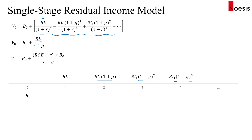We can express residual income in year one in terms of ROE minus R, multiplied by the current book value per share. If ROE equals R, then that term equals zero, leaving the intrinsic value equal to the current book value — so V0 equals B0.